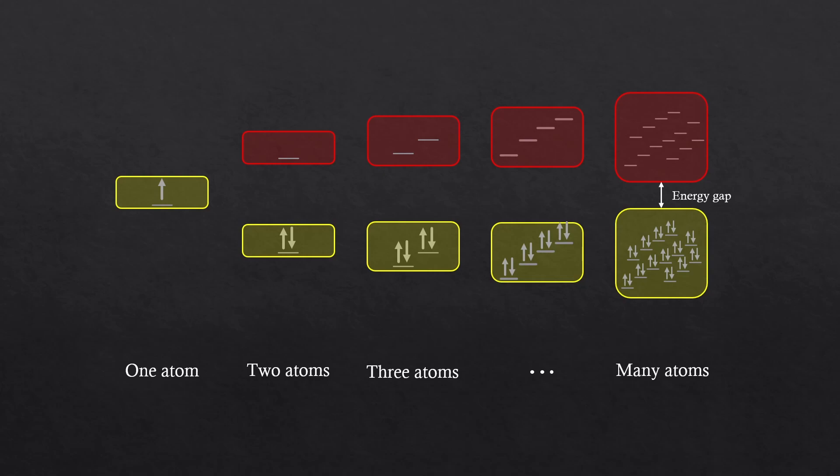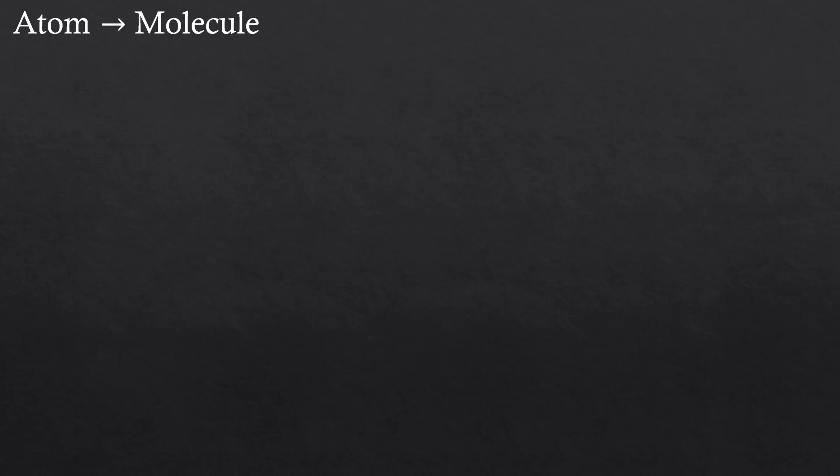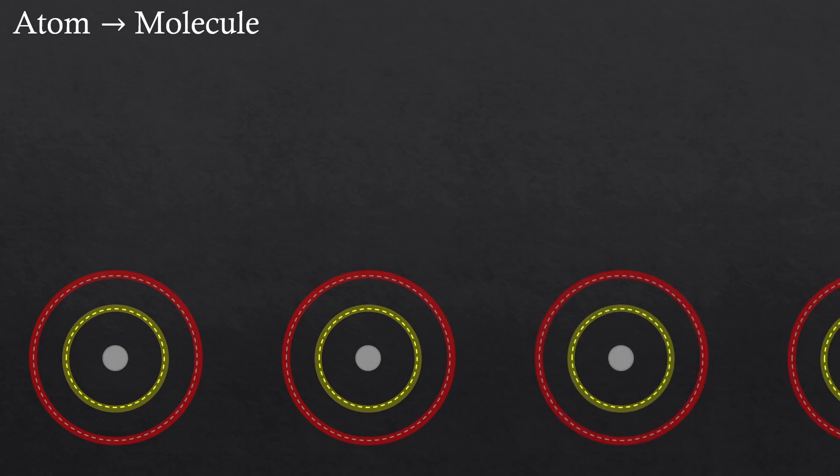But hold on, we can reconsider what bonding really means. Bonding describes an interaction between two atoms. Even if they're not right beside each other, as long as they're close enough, there will still be some level of interaction between all the atoms.